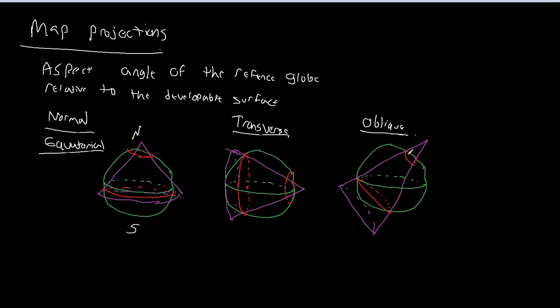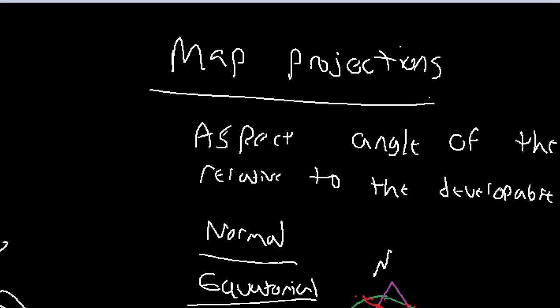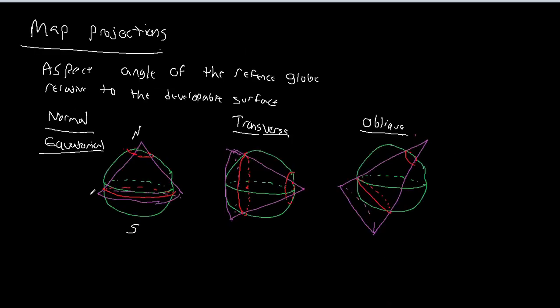And so why do we care about aspect? It seems kind of strange that we would bother with this sort of terminology here. But what you have to think about is the fact that this allows us to control where the standard lines are, which allows us to control where our distortion is. So as a general rule, you want your standard lines to match up as closely as possible with the region of interest.